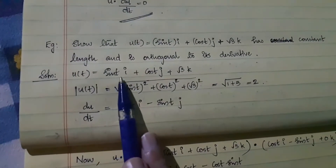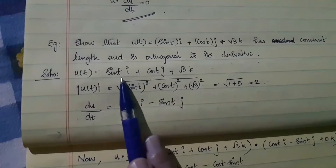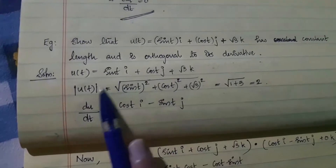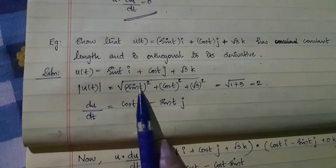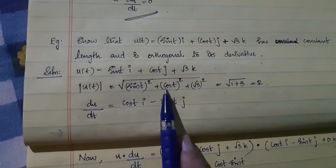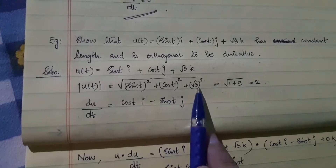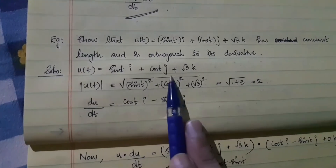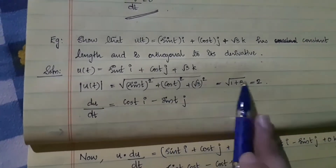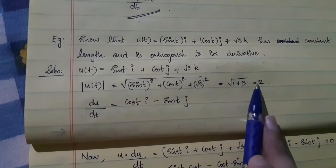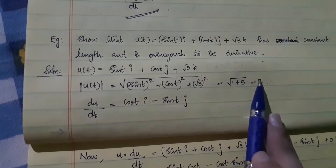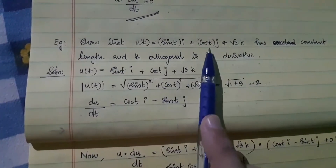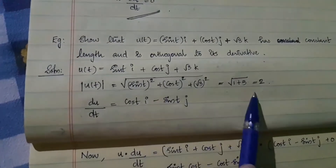u(t) is given as sin(t)i plus cos(t)j plus √3 k. We can find the magnitude of u(t) as the square root of sin²t plus cos²t plus (√3)², which is sin²t plus cos²t equals 1 and (√3)² equals 3. So it is the square root of 1 plus 3, which is the square root of 4, which is 2. So we have shown that the given vector-valued function is of constant length.